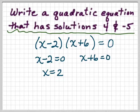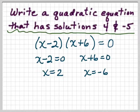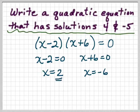And x plus 6 equals 0, which means if you solve for x, you subtract 6 from each side, so you have x equals negative 6. That's working from the problem to the answer. But we want to work backwards from that.